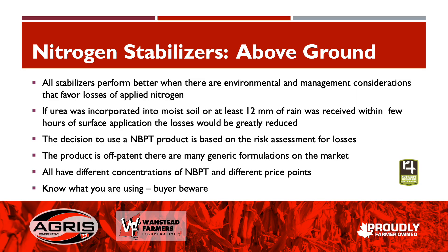All stabilizers perform better when environmental conditions or management situations actually encourage nitrogen loss. If urea is incorporated or there's a half-inch of rain after application, losses would be greatly minimized. So the decision to use NBPT is based on risk assessment for loss. The product is off patent, and there are many generic formulations on the market with different concentrations of NBPT and different price points — so it's a buyer-beware situation.